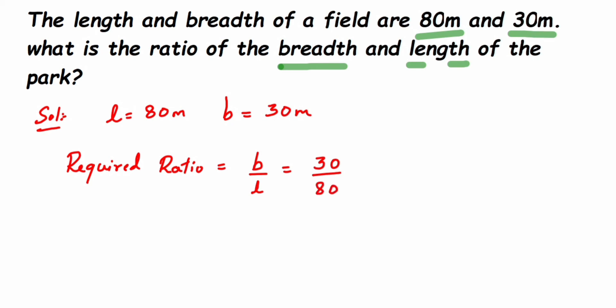When you're writing a ratio, you don't have to write the units. You can cancel the numbers or just simply cancel the zeros. Here I'm going to cancel zeros, so the number will become 3 upon 8.